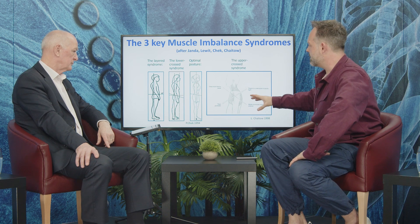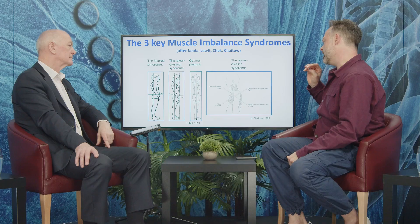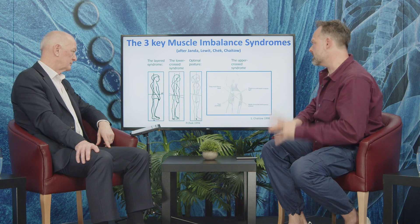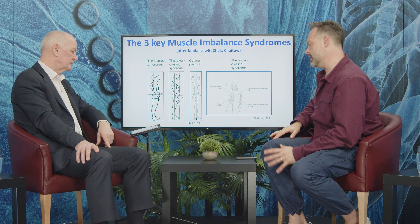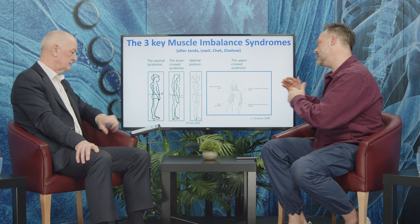What drives that in Janda's philosophy is short tight pecs — in particular pec minor — which protract the shoulder; long weak rhomboids and middle trapezius, which allow the shoulder to protract; short tight sternocleidomastoid, upper trapezius, levator, and suboccipitals, which pull the head forwards; and then long weak or inhibited deep cervical flexors and supra- and infrahyoid group muscles. Janda's concept is that these muscles draw the joints into a certain position — in this case, a hyperkyphosis and a forward head posture.